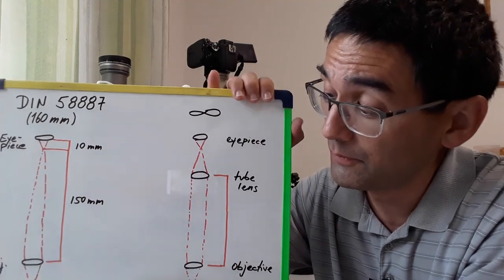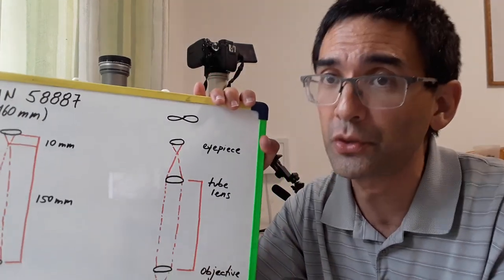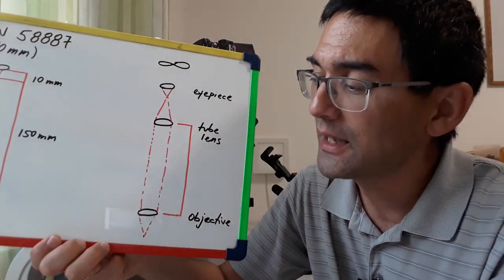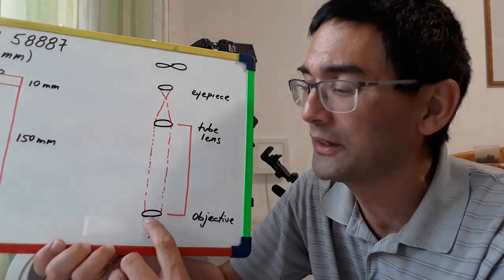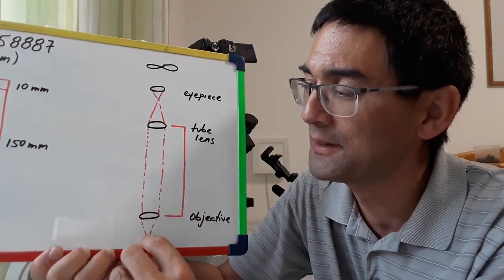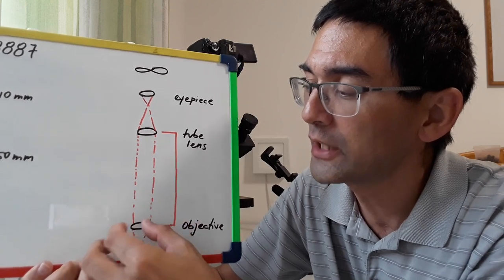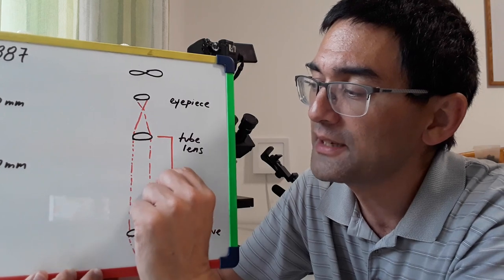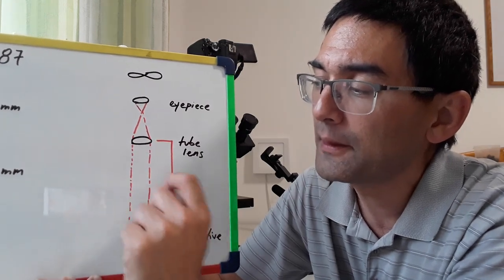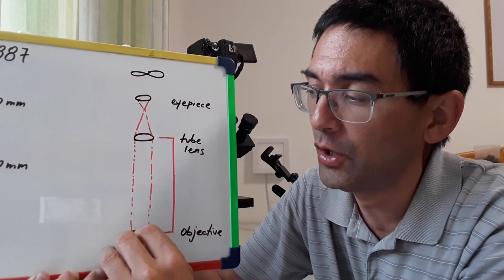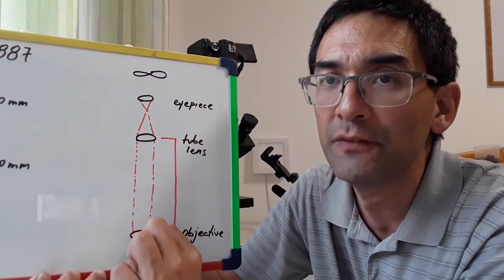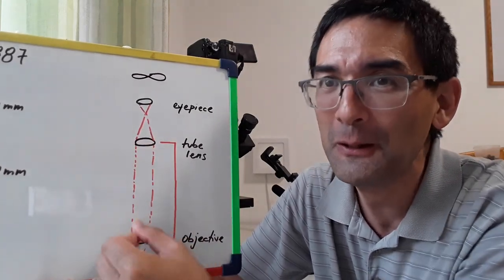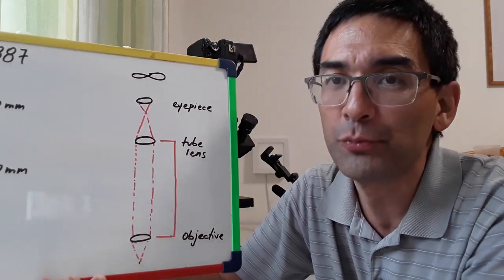And for this reason around, I don't know, 20 years ago or so, maybe 30 years ago, the first microscopes started to appear that have the so-called infinity objectives. In this case I've also only drawn one lens but in reality it's a system of lenses and what happens is that the objective now creates a so-called parallel light beam. So this means that if you place any filters in here then this is not going to change the focus.